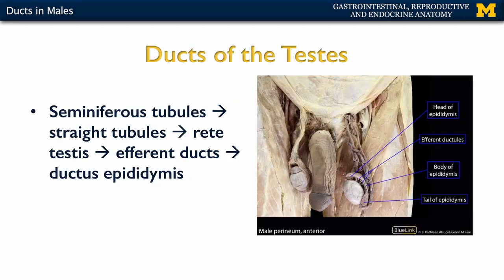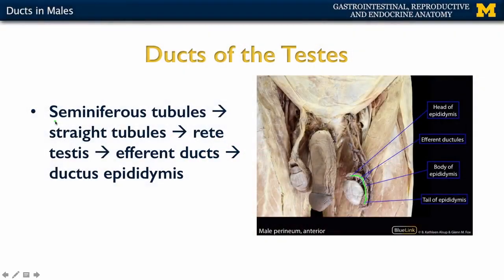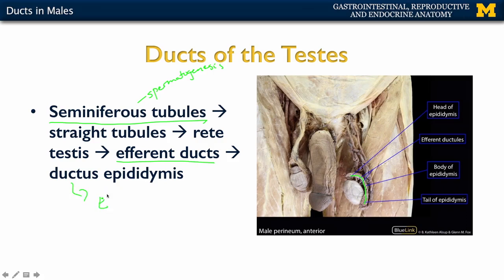We'll start with the ducts associated internally with the testes. You can see here what we refer to as the epididymis — a coalescing of the more internal structures of the testes, which are the seminiferous tubules. This is where spermatogenesis occurs, the actual formation of sperm. Those seminiferous tubules coalesce into fairly small, short straight tubules, which continue into the rete testes, into the efferent ducts, and eventually form the ductus epididymis, which is a portion of the larger epididymis.